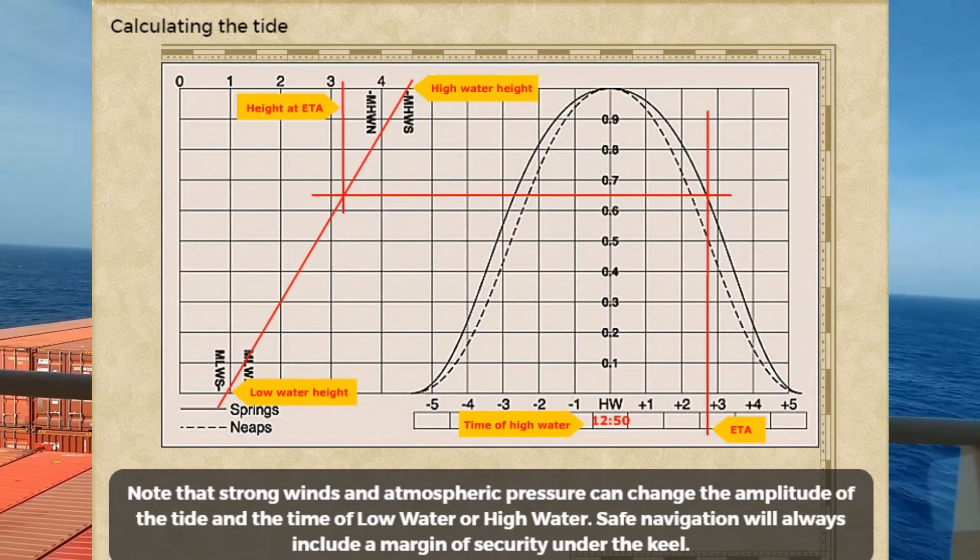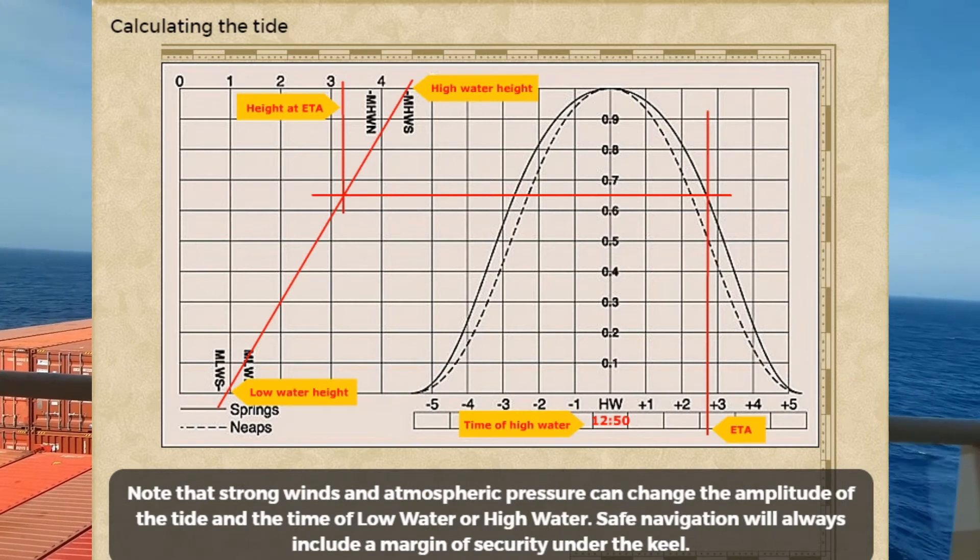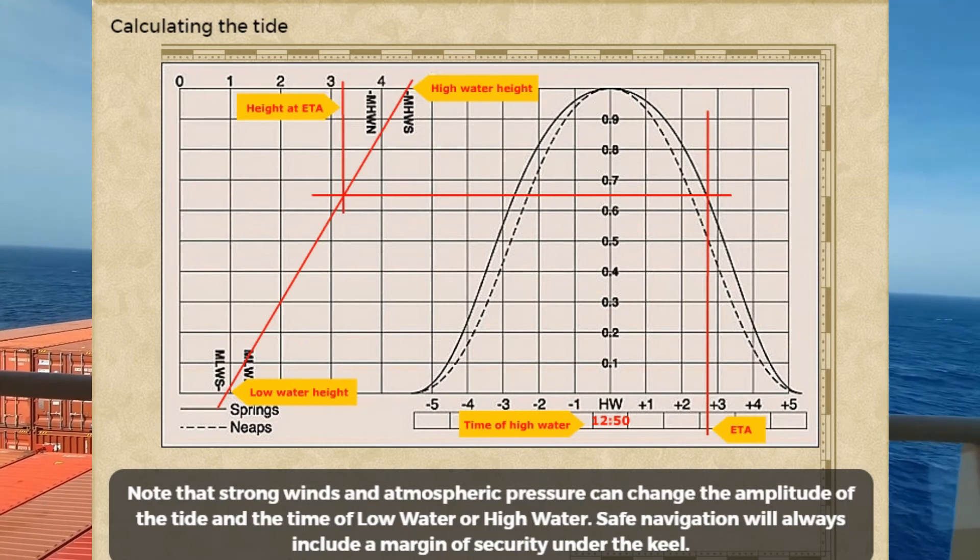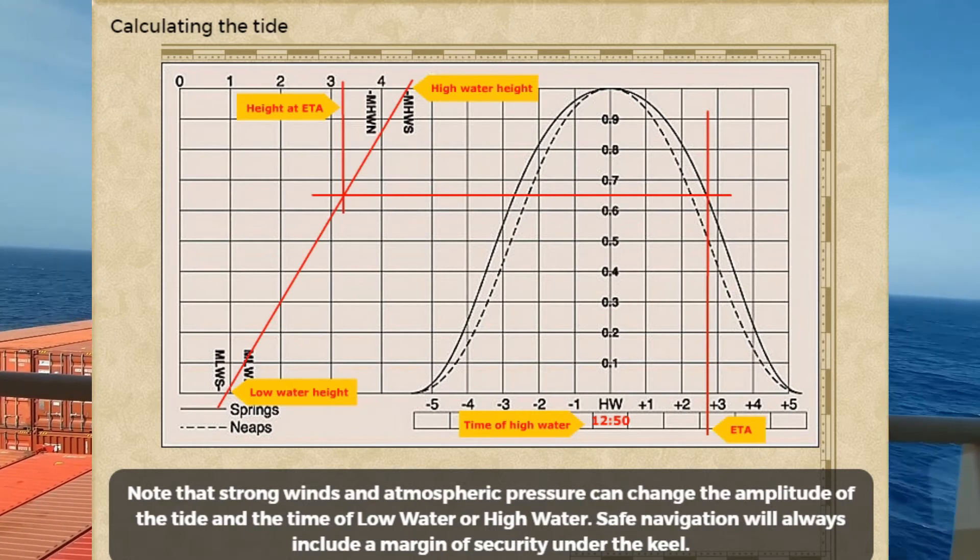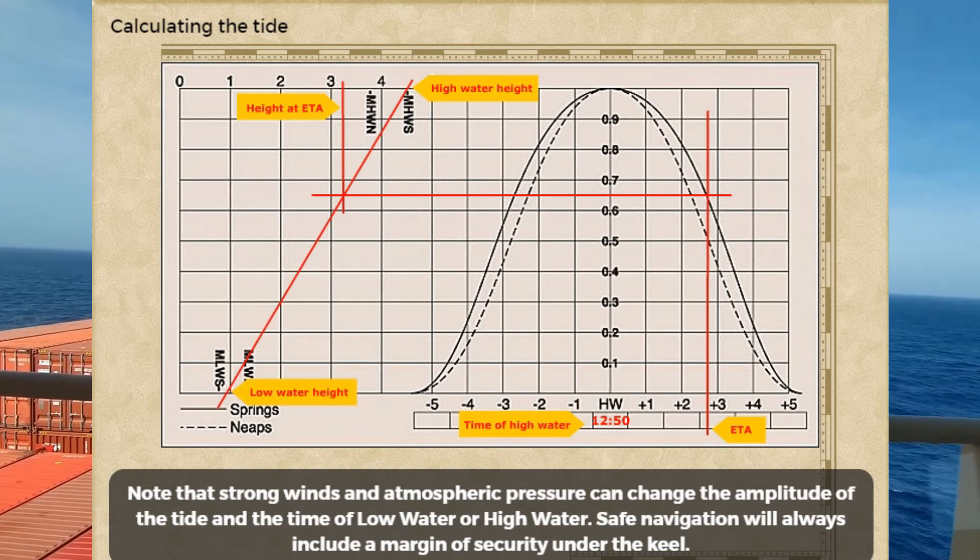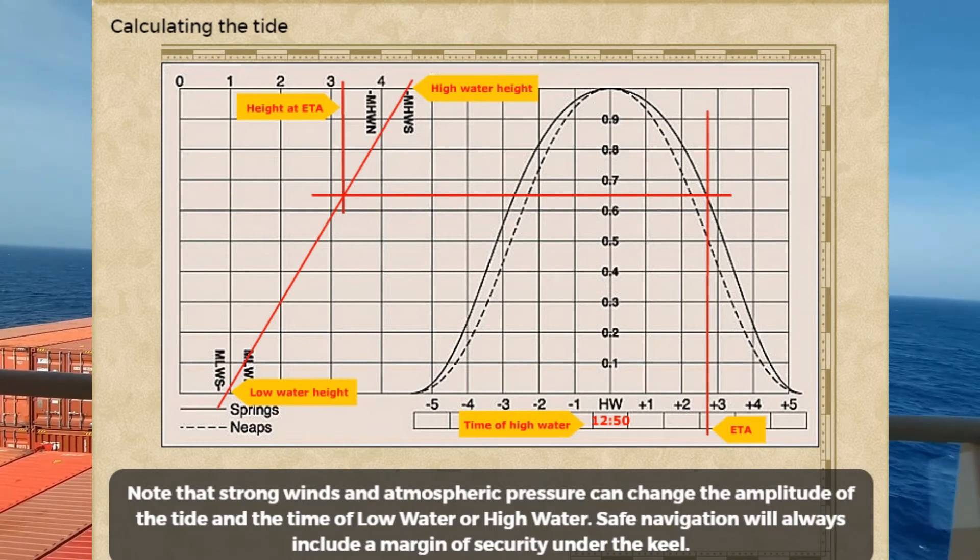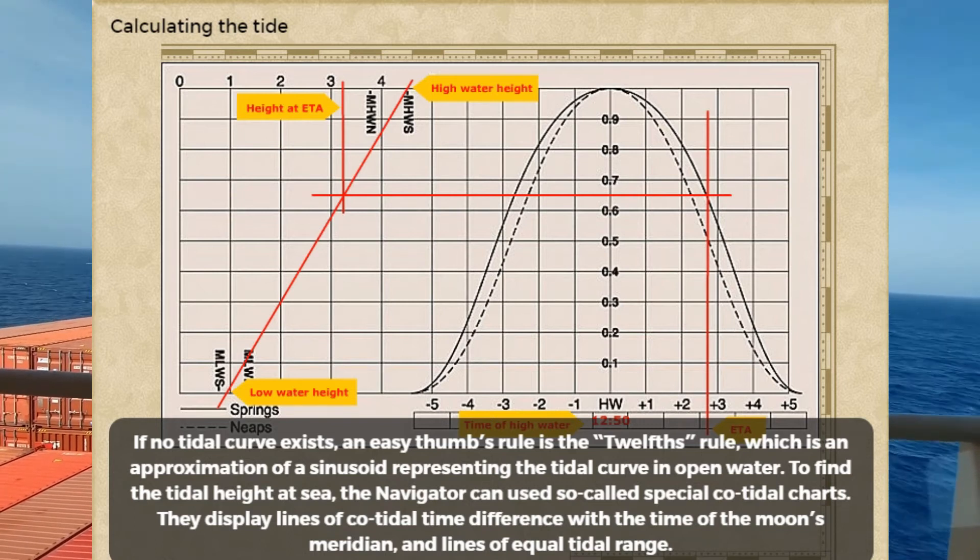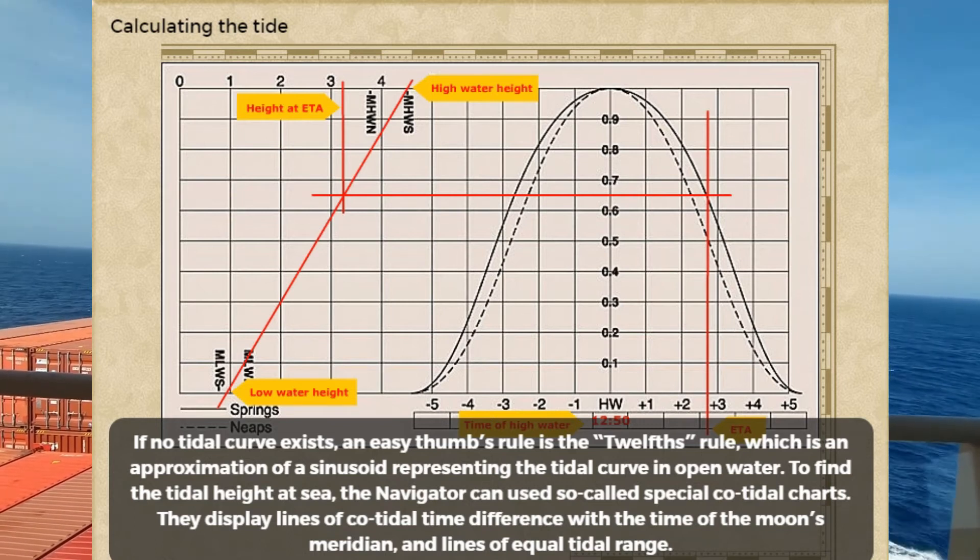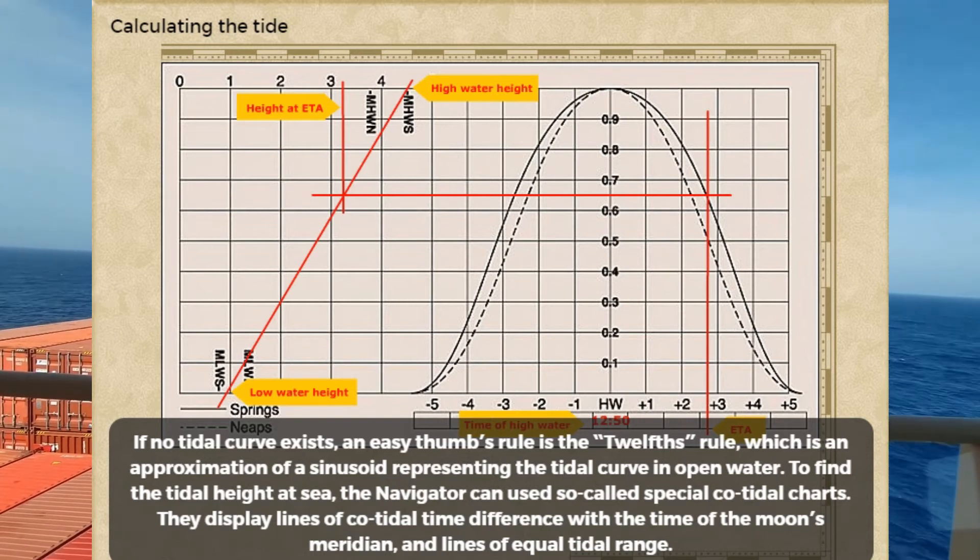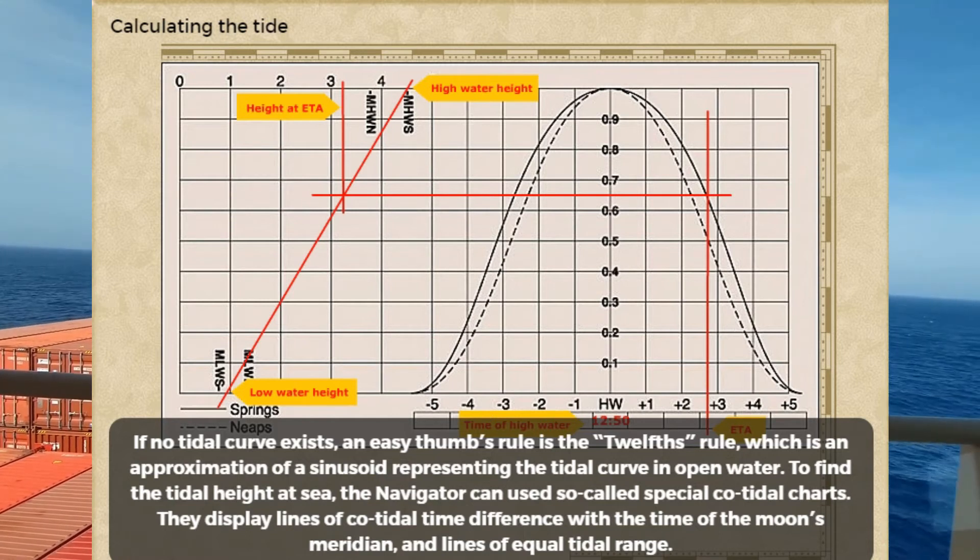Note that strong winds and atmospheric pressure can change the amplitude of the tide and the time of low water or high water. Safe navigation will always include a margin of security under the keel. If no tidal curve exists, an easy rule of thumb is the twelfths rule, which is an approximation of a sinusoid representing the tidal curve in open water.